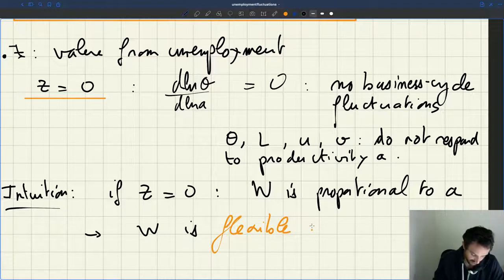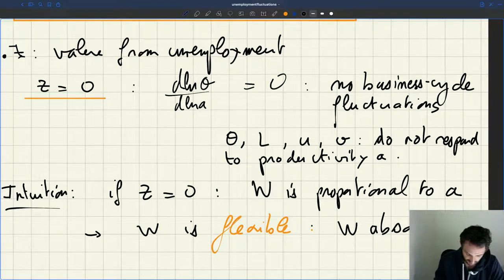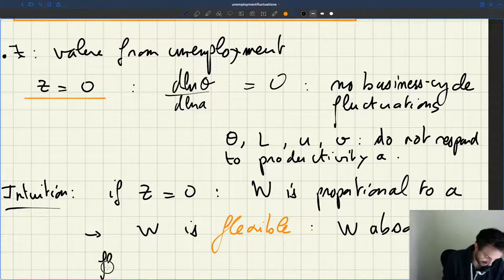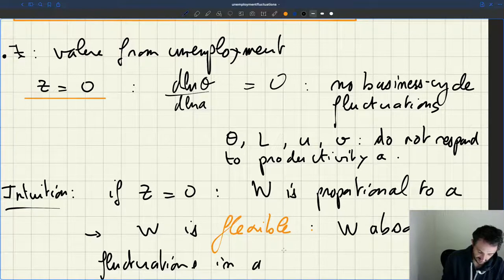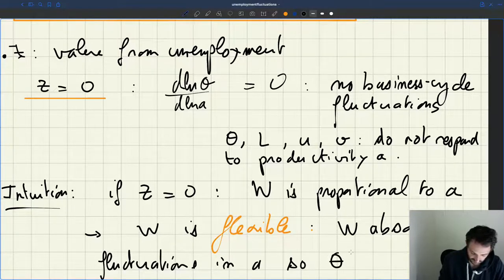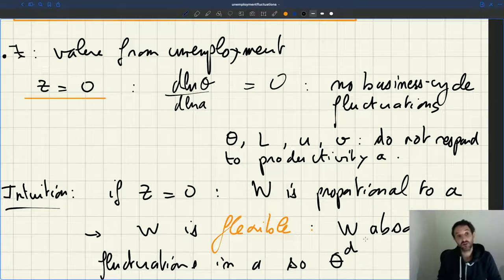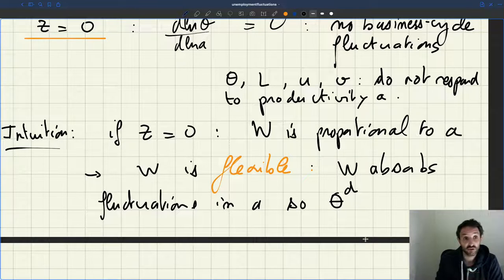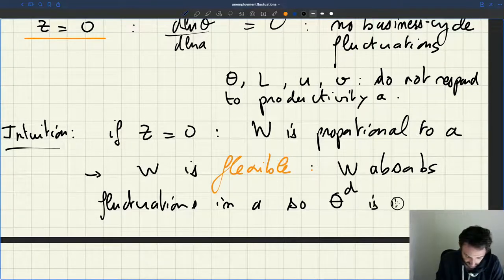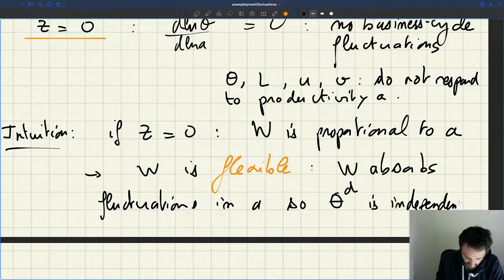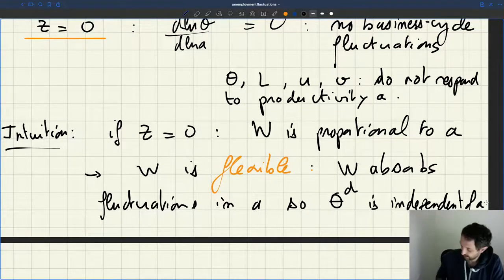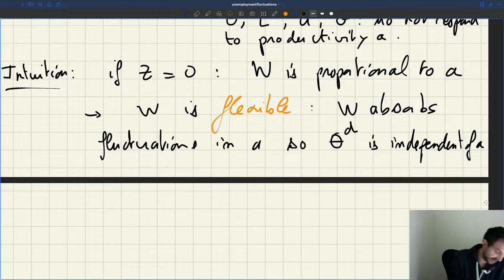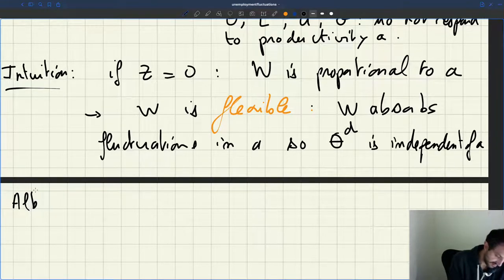Because productivity moves, but the wage moves one for one with that. So firms have no incentive to change anything. Workers are more productive, but they also earn more. So firms have no incentive to change the size of their firm. When your wage is flexible, the wage absorbs the fluctuations in A, so that the demand, and here in the case of a linear production function, the demand is just tightness, is independent of A.